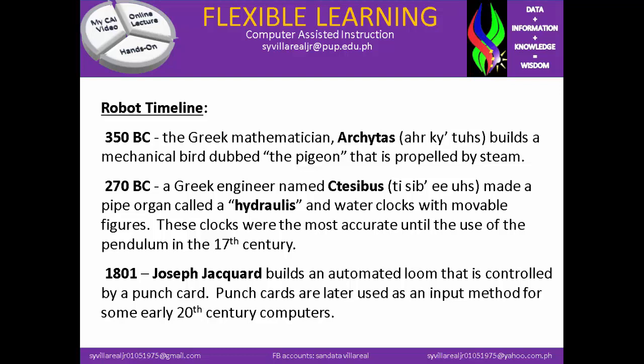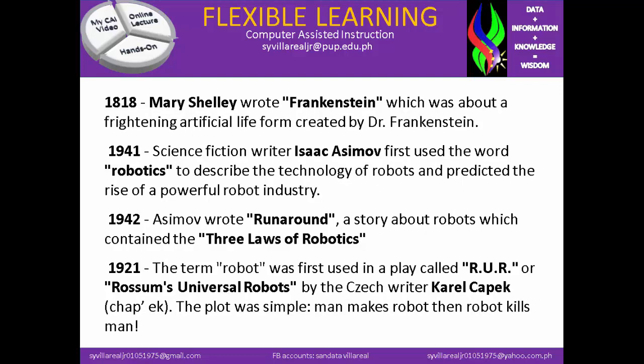In 1801, Joseph Jockward builds an automated loom that is controlled by a punch card. Punch cards are later used as an input method for some early 20th century computers. In 1880, Mary Shelley wrote Frankenstein, which was about a frightening artificial life form created by Dr. Frankenstein. In 1941, science fiction writer Isaac Asimov first used the word robotics to describe the technology of robots and predicted the rise of a powerful robot industry.